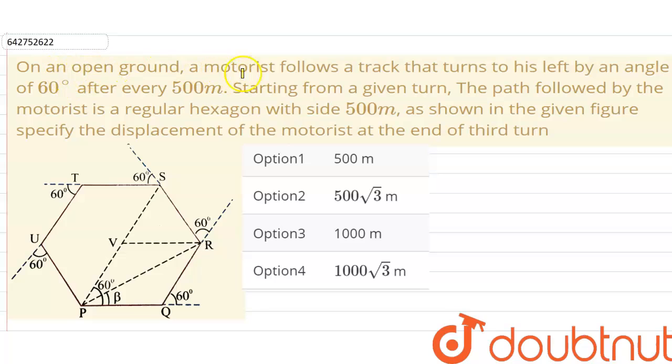On an open ground, a motorist follows a track that turns to his left by an angle of 60 degrees after every 500 meters. Starting from a given turn, the path followed by the motorist is a regular hexagon with side 500 meters, as shown in the given figure. Specify the displacement of the motorist at the end of third turn.